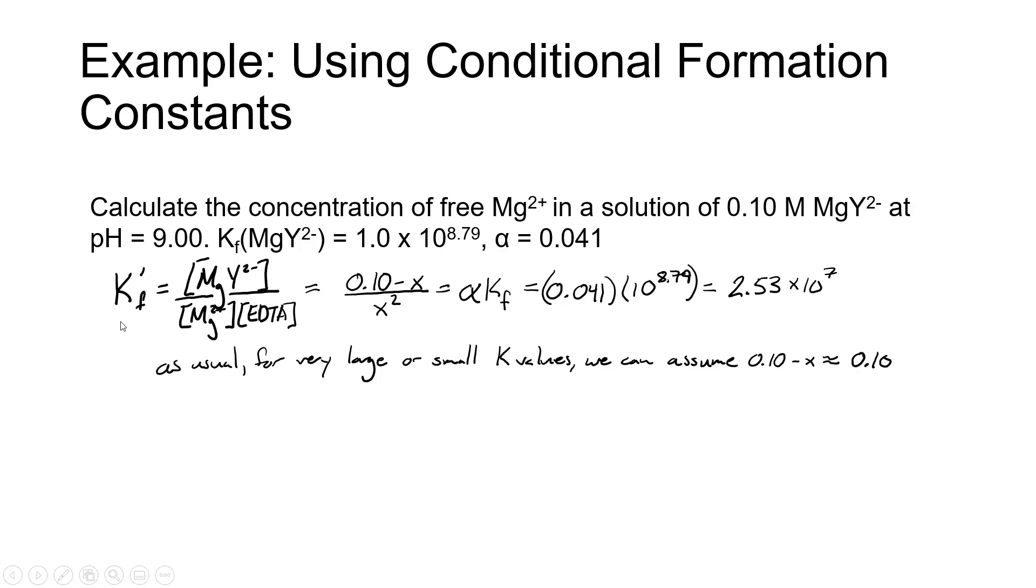Because the conditional formation constant is so large, as usual, we can make a simplifying assumption, but in this case we'll make it in the numerator, that the X, the amount of free magnesium that's been released from the EDTA complex, is very small compared to 0.10. Our equilibrium constant is significantly larger than 1 times 10 to the 5th, so generally we'll be validated in making that assumption. So we're going to simplify our numerator only and call it 0.10.